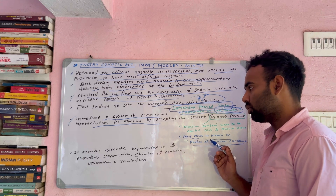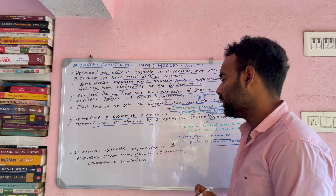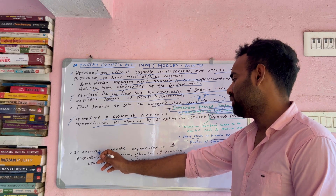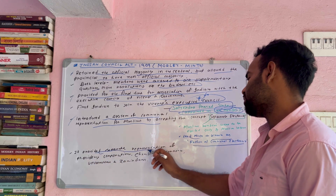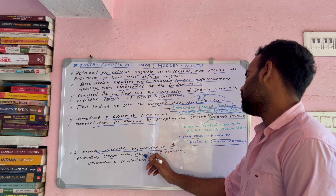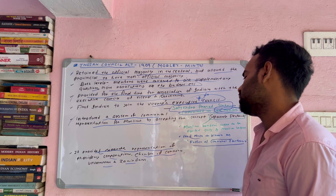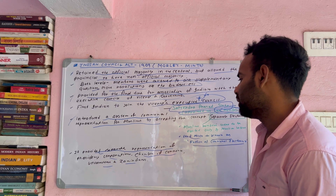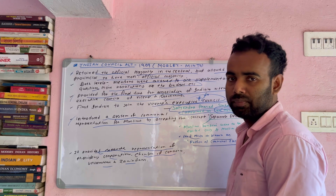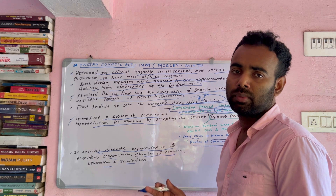This covers all three important questions. It provided separate representation of Presidency, Corporation, Chamber of Commerce, University, and Zamindars. So he created separate representation for each representative body.